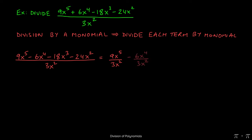From that we subtract the quotient of 6x to the fourth over 3x squared minus 18x cubed over 3x squared, and finally minus 24x squared over 3x squared.